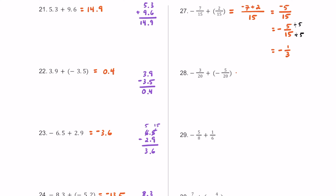For number 28, common denominators of 20 again. Give the negative to the 3 on top: negative 3. Give the other negative to the 5: negative 5. Adding negative 3 plus negative 5: two negatives, so just add absolute values, giving negative 8 over 20. Move the negative to the fraction bar. GCF of 8 and 20 is 4: 8 divided by 4 is 2, 20 divided by 4 is 5. Final answer: negative 2 fifths.